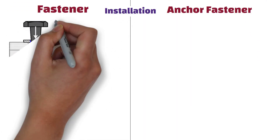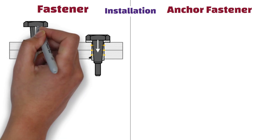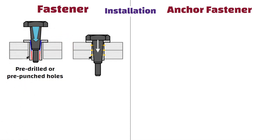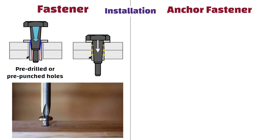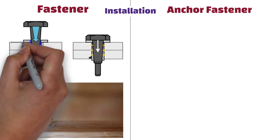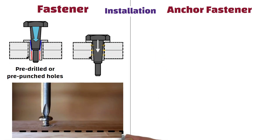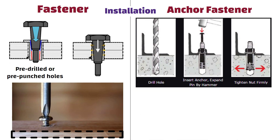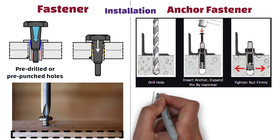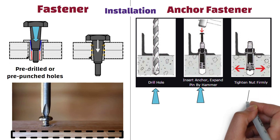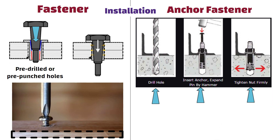Installation: Fasteners are typically installed by inserting them into pre-drilled or pre-punched holes and securing them with a tool such as a screwdriver or wrench. They rely on the material they are inserted into for support and strength. In contrast, anchor fasteners require additional steps for installation. They often involve drilling a hole into the base material, inserting the anchor and then expanding or engaging the anchor to provide a secure attachment.